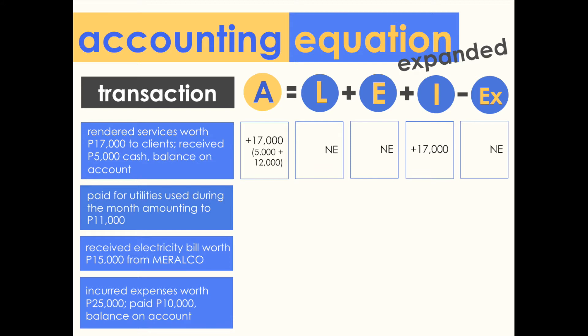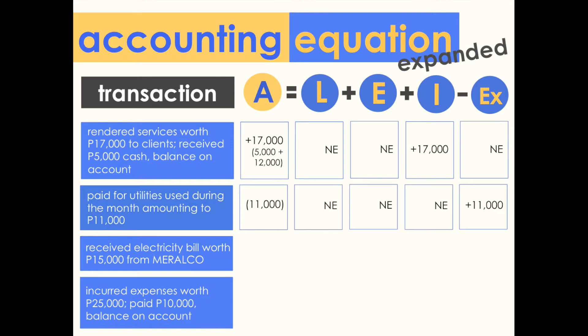Transaction two: paid for utilities used during the month amounting to 11,000 pesos. There is a cash payment — a decrease in assets of 11,000. Since this pertains to utilities used, this is an expense and there should be an increase in expense amounting to 11,000 pesos.